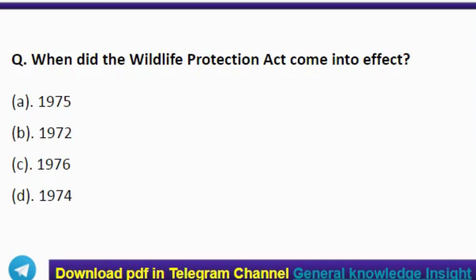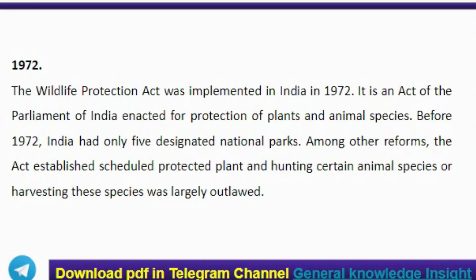Next question: when did the Wildlife Protection Act come into effect? The correct answer is option B, the year 1972. The Wildlife Protection Act was implemented in India in 1972. It is an Act of the Parliament of India enacted for the protection of plant and animal species. Before 1972, India had only five designated national parks. Among other reforms, the Act established schedules of protected plants and largely outlawed hunting of certain animal species.